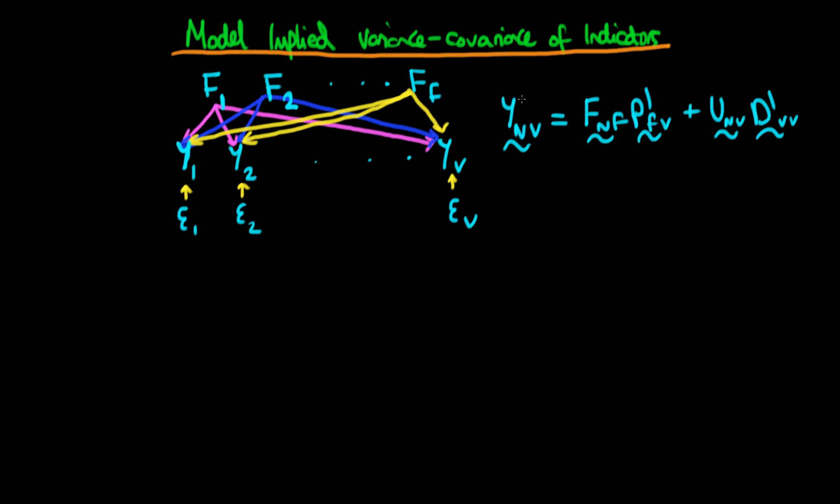When we write out the model in its matrix notation form, then we find that y_nv, our matrix of indicator scores for the v variables for n individuals, is equal to f_nv, where that's the matrix of factor scores for each of the n individuals,